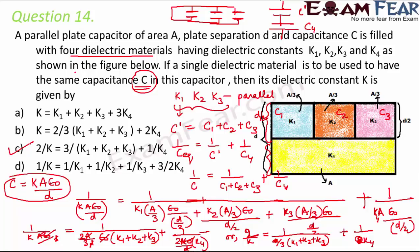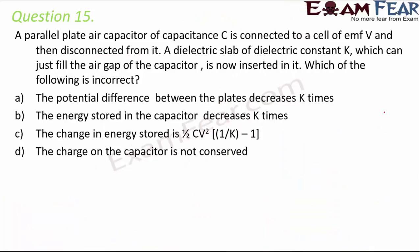The problem is not complicated, but you need to understand the configuration carefully. Many students mistakenly treat k1, k2, k3 as series. You must recognize that when one plate of all three capacitors is connected together and the other plate is also connected together, they are in parallel. Identify series vs. parallel carefully before solving.